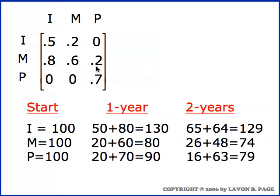In the older group, twenty percent of the eighty matures — which is sixteen — age into the older group, and seventy percent of the ninety already there — which is sixty-three — survive, to give us a total of seventy-nine. This is tedious, this is a mess — who would want to do things this way?